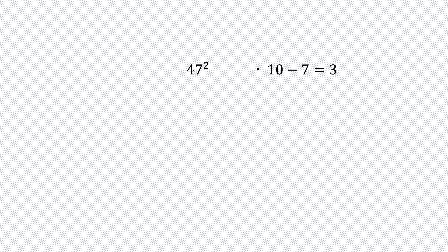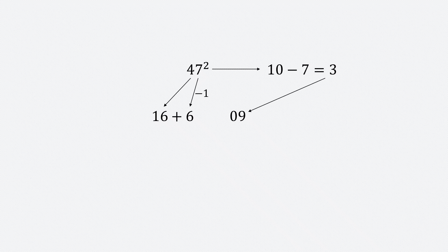Let's take another example — 47 squared. Once again, we won't square 7 directly. We'll subtract 7 from 10 and get 3. And we square 3 to get 9 — we write 09 because we're taking up 2 slots for the last two digits. Now, we square 4 to get 16. Subtract 1 from 7, get 6. Add 6 to 16, get 22. So, our final answer is 2209 — which is indeed the square of 47.